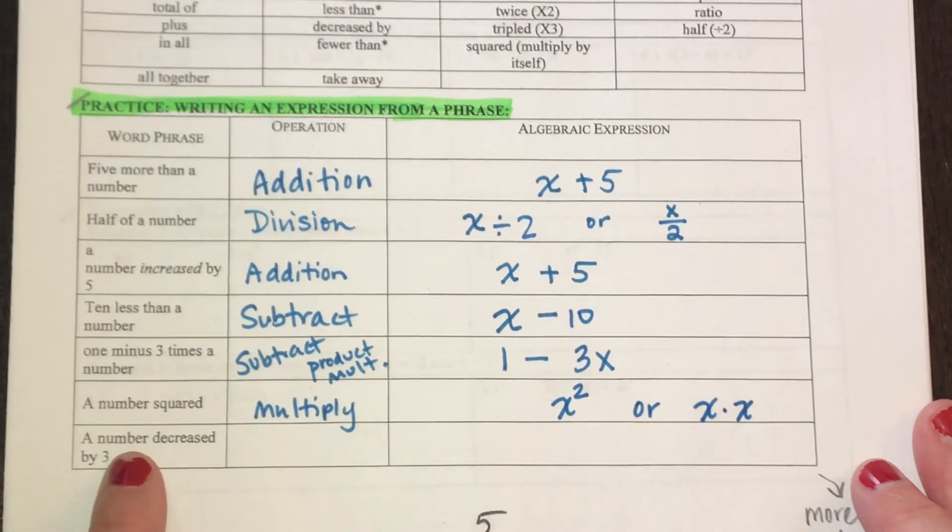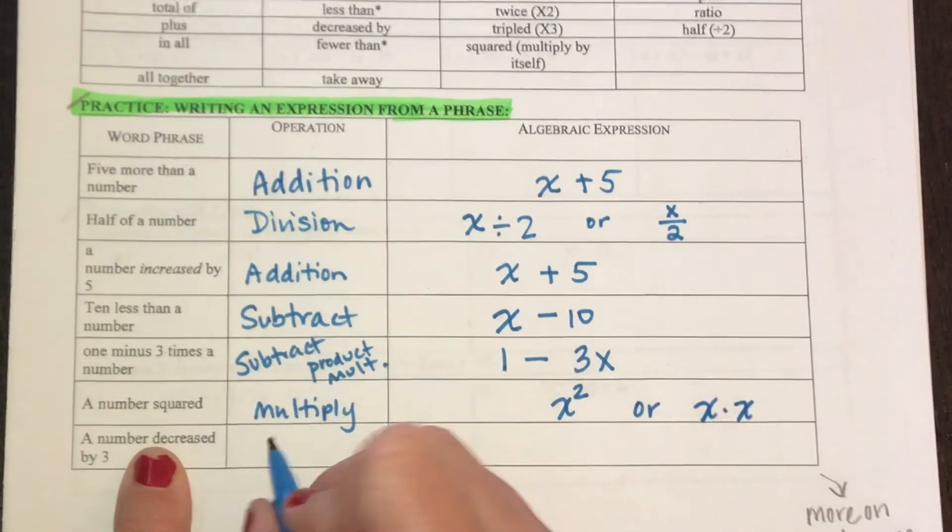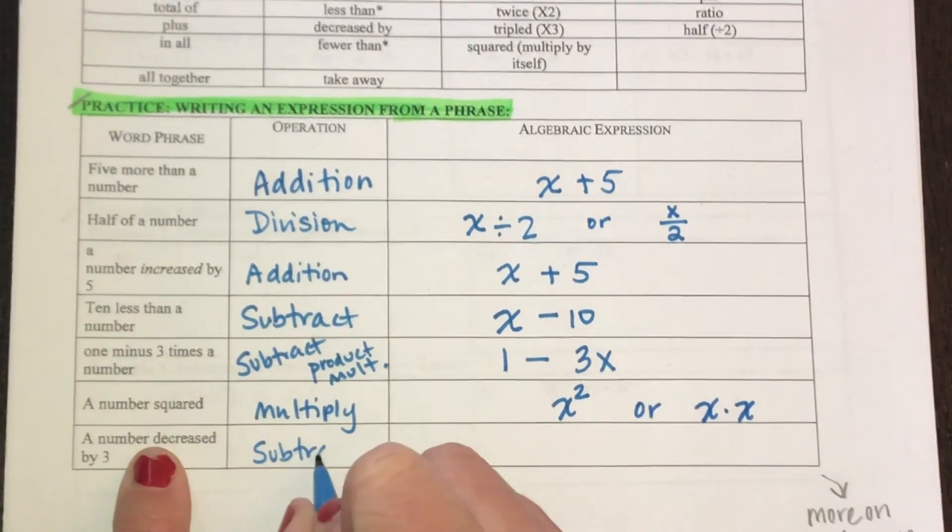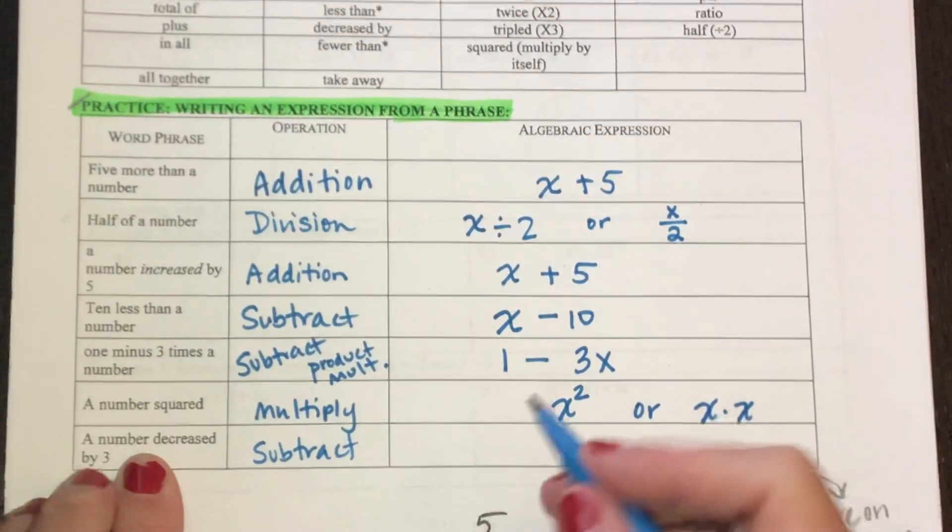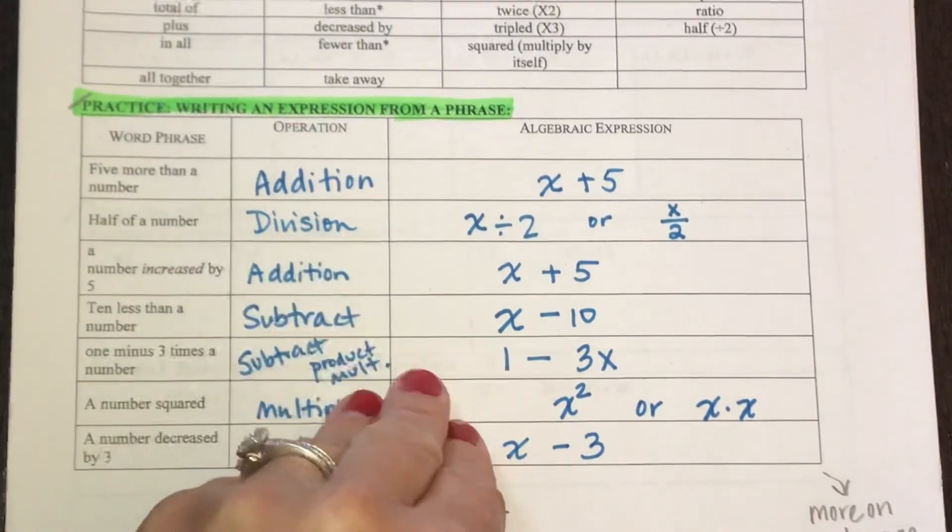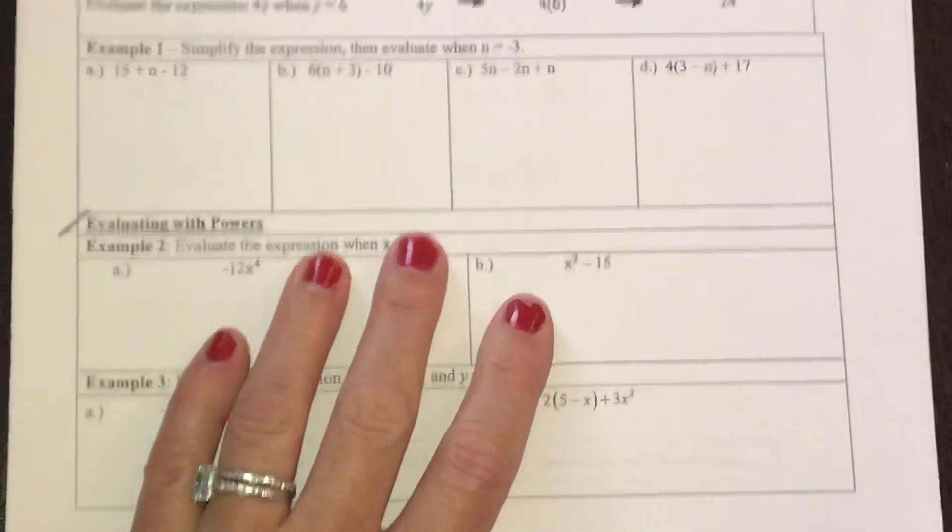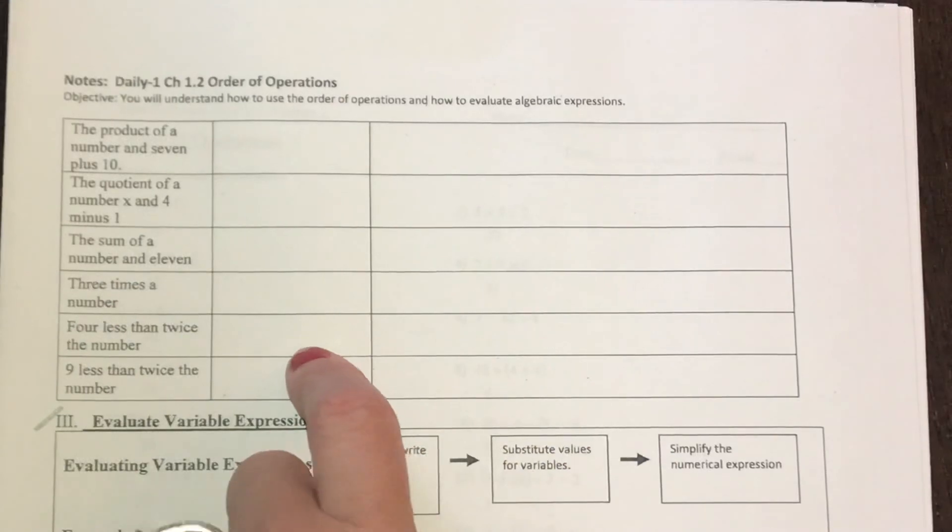Then for the next one, a number decreased by, a number decreased by would be a subtract. And that's up here in this column, decreased by, a number decreased by three. Stay tuned to the next video for these examples here.